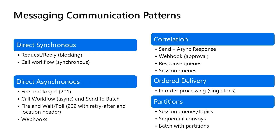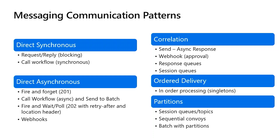There are a couple different types of messaging communication patterns. For direct synchronous messaging you can do a request-reply — that's blocking. For example, you can do an HTTP action that waits for a synchronous call to come back. Or you can call a workflow designed either synchronously or asynchronously, waiting for that workflow to return.